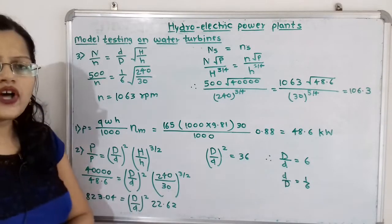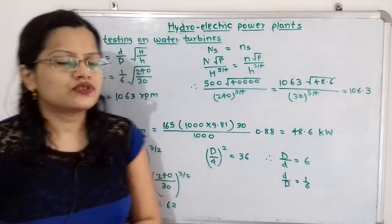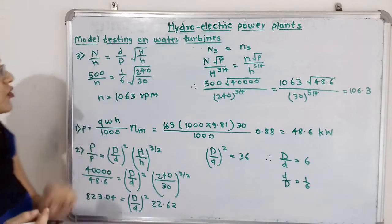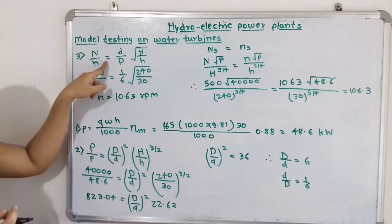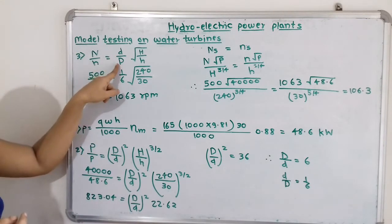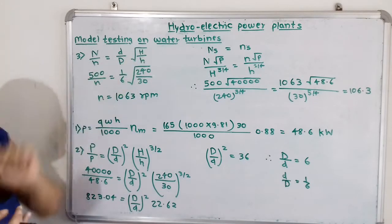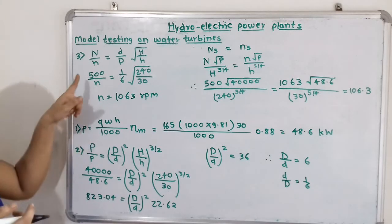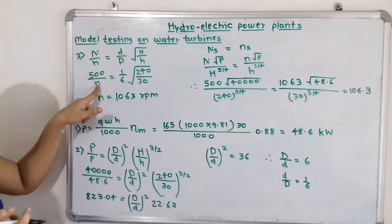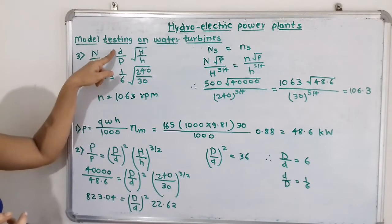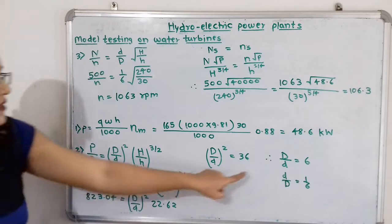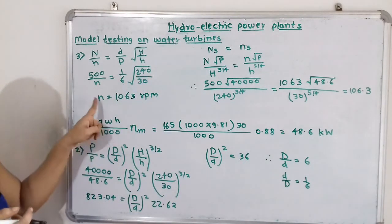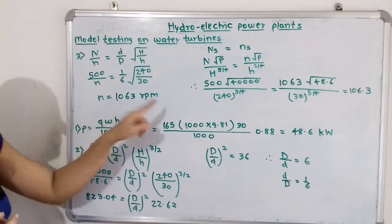Now we calculate the speed of the model. The formula is: capital N divided by small n equals (small d divided by capital D) times the square root of (capital H divided by small h). Substituting: 500 divided by small n equals (1/6) times the square root of (240/30). Solving this, we get the model speed n equals 1063 RPM.